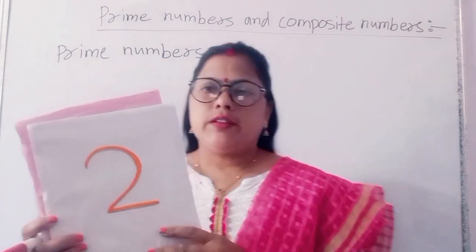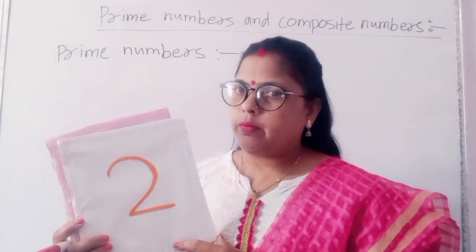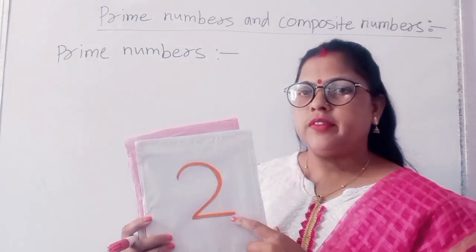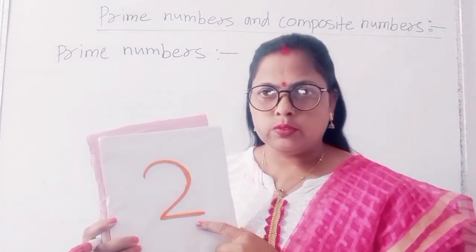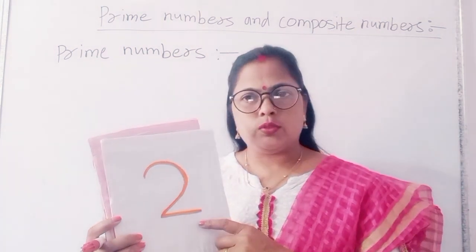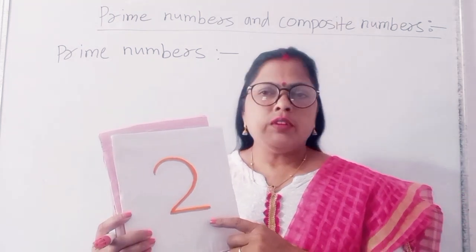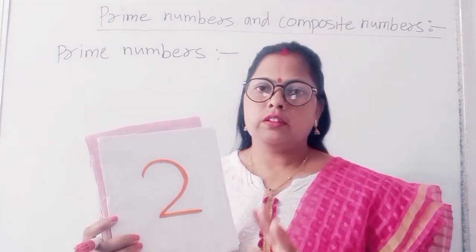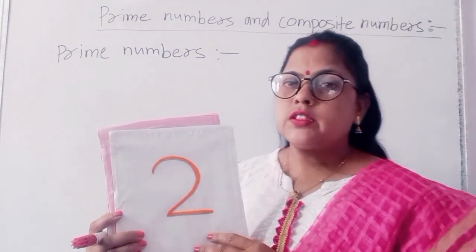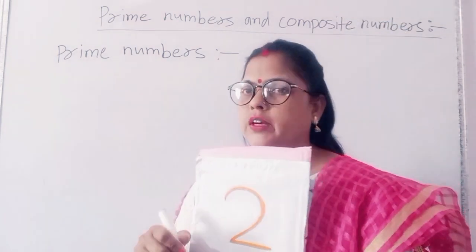Here is the example of 2. Is 2 a composite number or a prime number? First I will find the factor of 2. The factor of 2 is 1 and 2, which means it has 2 factors. So 2 is a prime number. Numbers which have only 2 factors are called prime numbers. So 2 is a prime number because it has only 2 factors.